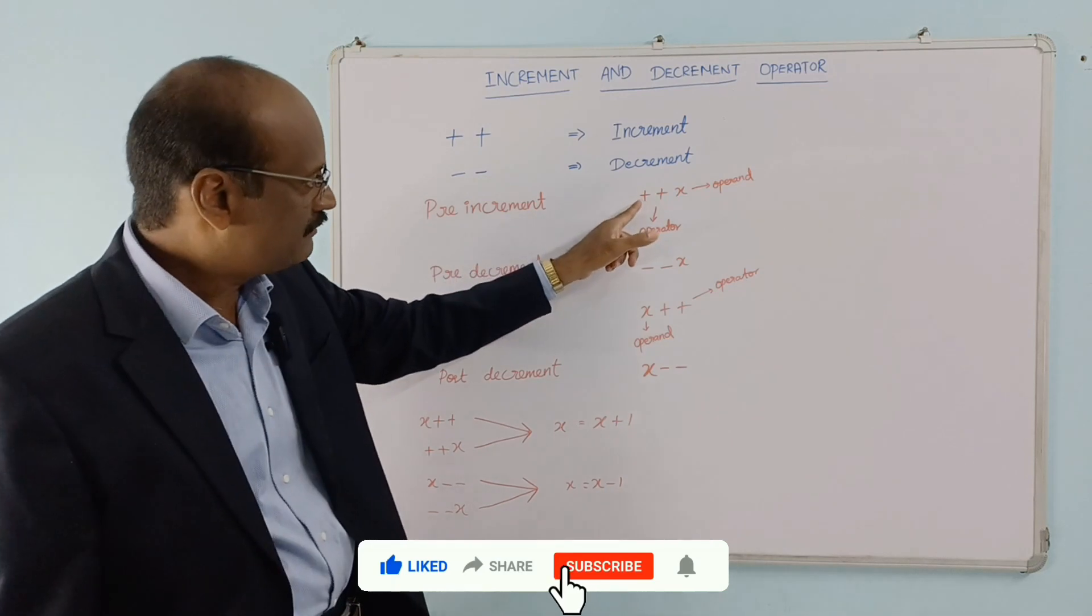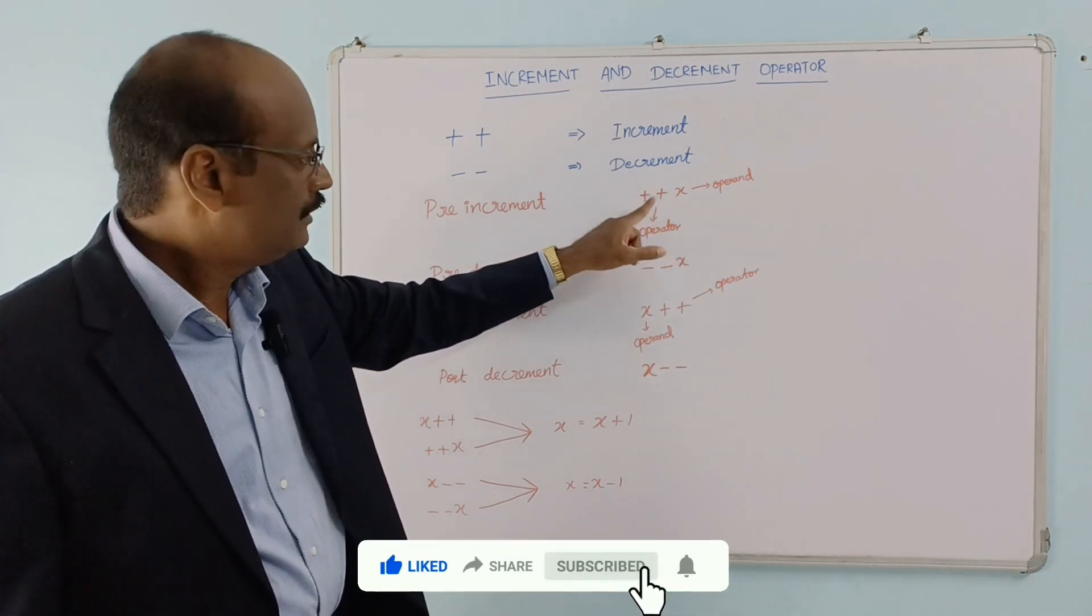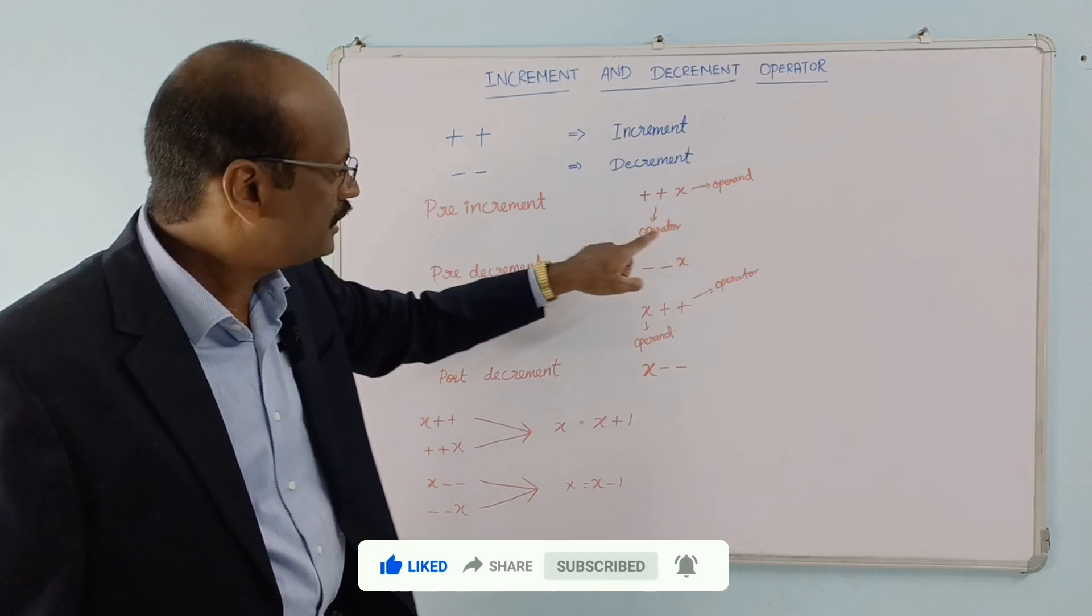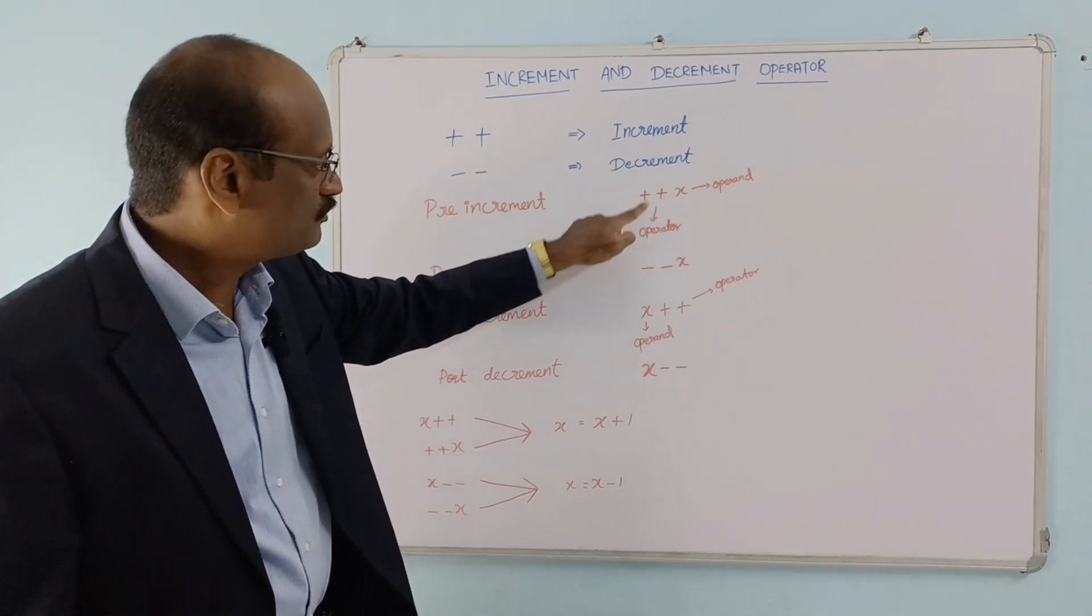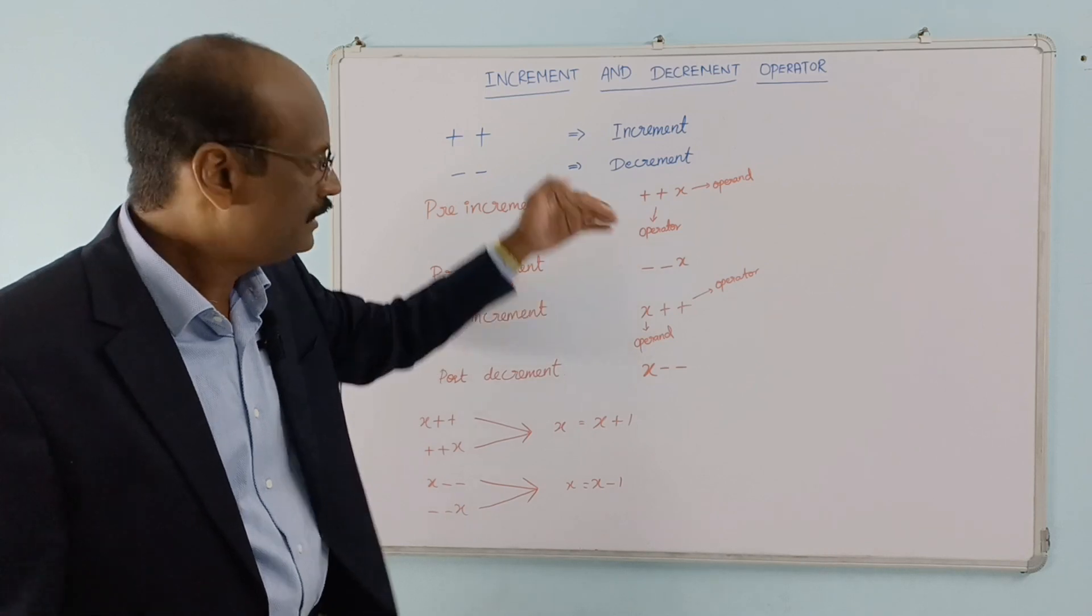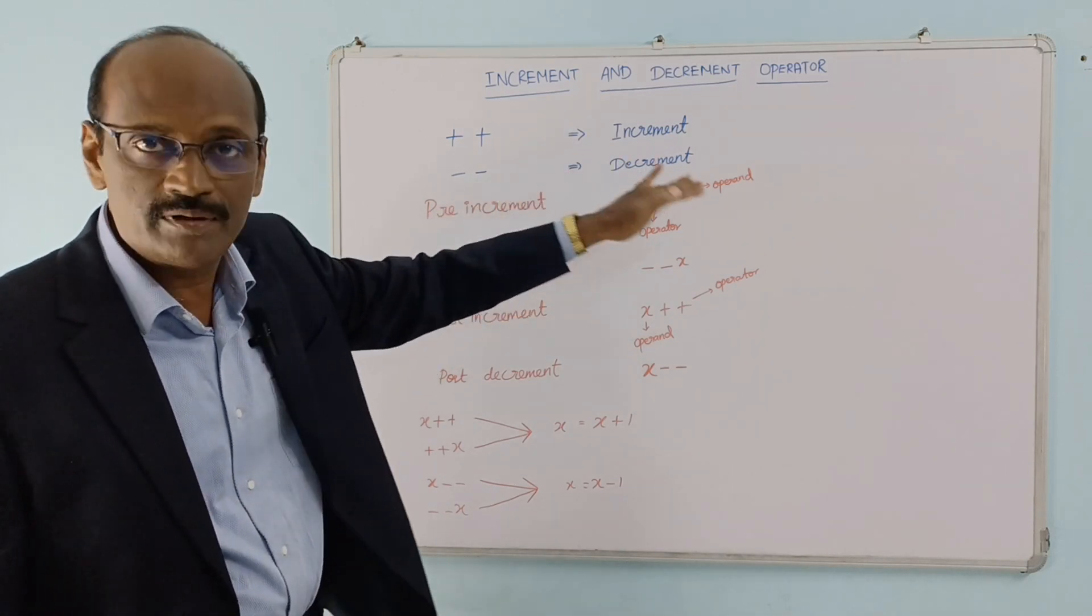In pre-increment, the increment operator comes before the operand. The operator is followed by the operand - plus plus is the increment operator, x is the operand, so it's written as ++x.